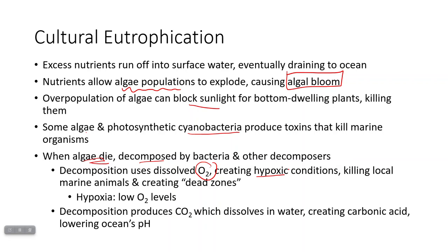Here is the really big problem: eventually those algae use up the nutrients and die, then they get decomposed. Unfortunately, decomposition uses dissolved oxygen. When dissolved oxygen is used up, that creates something called hypoxia — meaning you don't have enough oxygen. All the organisms in the water — animals, plants, everything except anaerobic bacteria — need oxygen to survive. This creates dead zones with massive fish death, crustaceans like crabs and lobsters dying, and bivalves like oysters and clams dying too, seriously disrupting marine ecosystems and impacting fishermen.